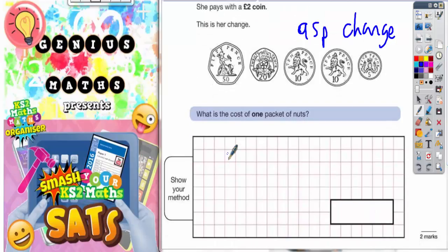So if we do two pounds which is £2.00 and subtract 95p which is £0.95, we'll find out what she actually spent.